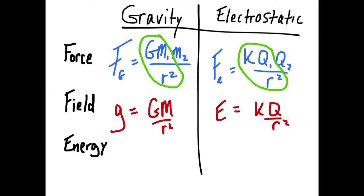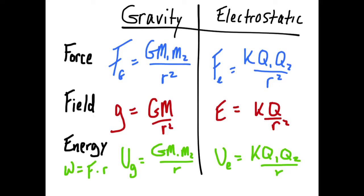And lastly, let's think about energy. Work is done as a product of force and displacement. In this case, displacement would be r. So if we just multiply both forces by r, then we get two equations for potential energy due to gravity, and potential energy electrostatic.